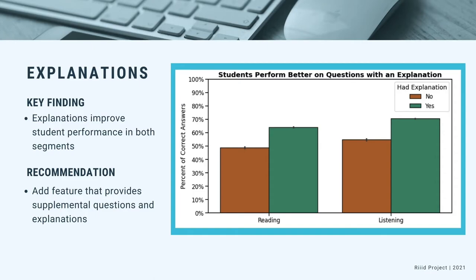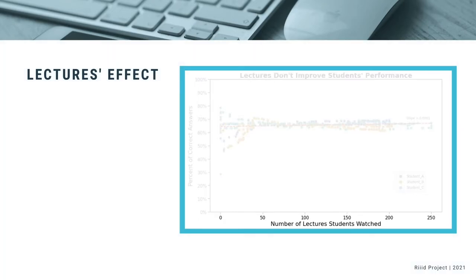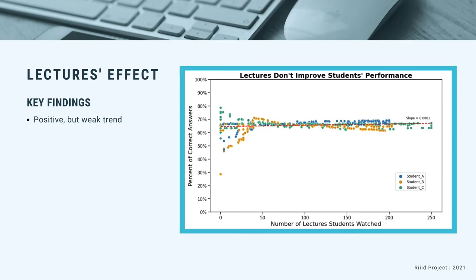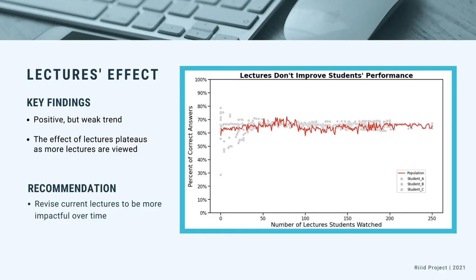Finally, let's examine how lectures impact student performance. We took a random sample of 2,000 students and picked the three who had viewed the most lectures among them. The colored dots in the graph depict their performances over time. The x-axis represents how many lectures a student viewed, while the y-axis represents their performance after viewing that many lectures. The graph shows that even though there was an initial performance increase for two students, as the number of lectures continued to increase, the performance of all students plateaued with no significant change thereafter. RID could revise the content of their lectures to make them more impactful for the full duration of a student's studies.